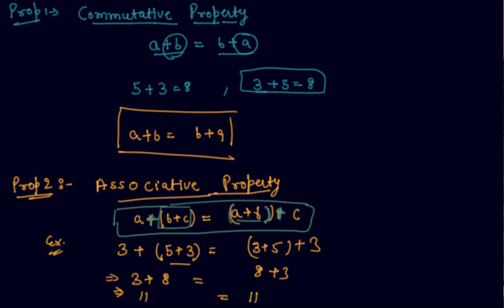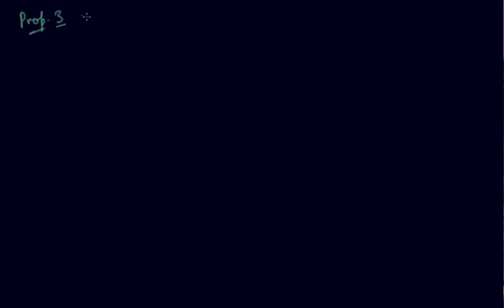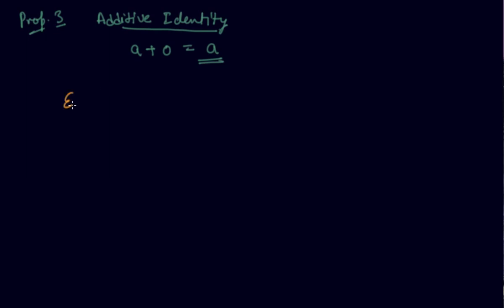I hope students you are clear about commutative and associative properties. Now property 3 is additive identity. This property says that if you add 0 to any number, the result is the same number. So a plus 0 equals a always. For example, if I add 0 to minus 3, I will get minus 3 itself. Whenever you add 0 to any number, the number remains the same.